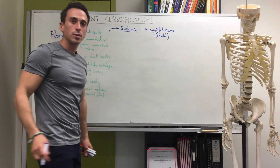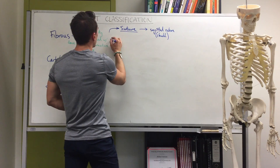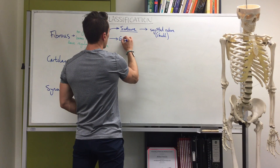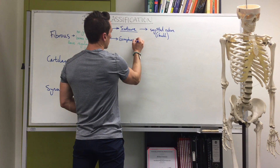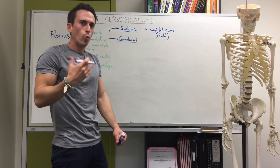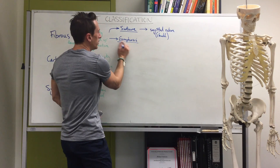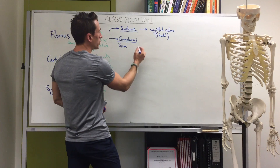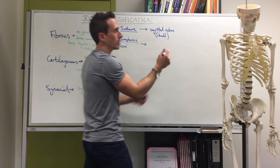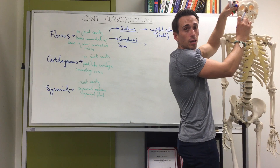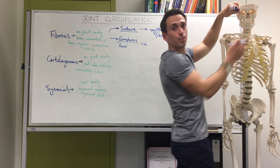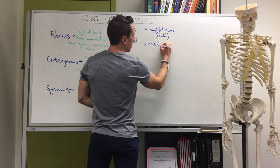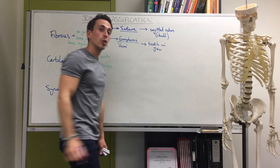Another type of fibrous joint is called a gomphosis. When you see 'gom,' think of 'gum' — the gum in your mouth. The gomphosis joint is simply the joint in which the teeth articulate within the jaw, so teeth in jaw equals a gomphosis.